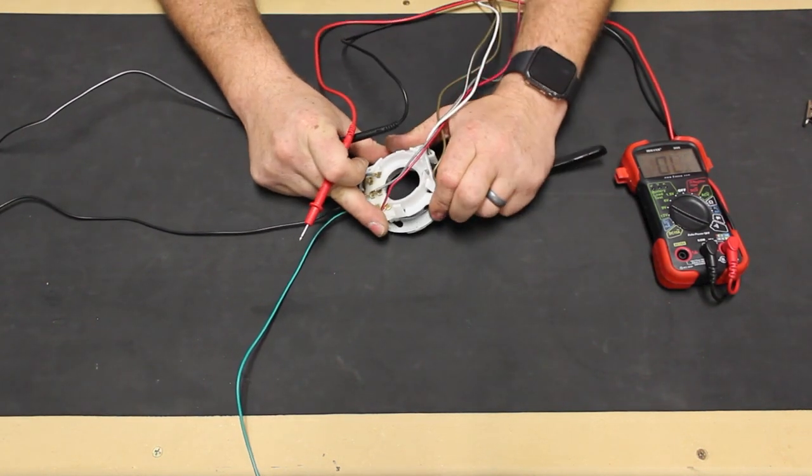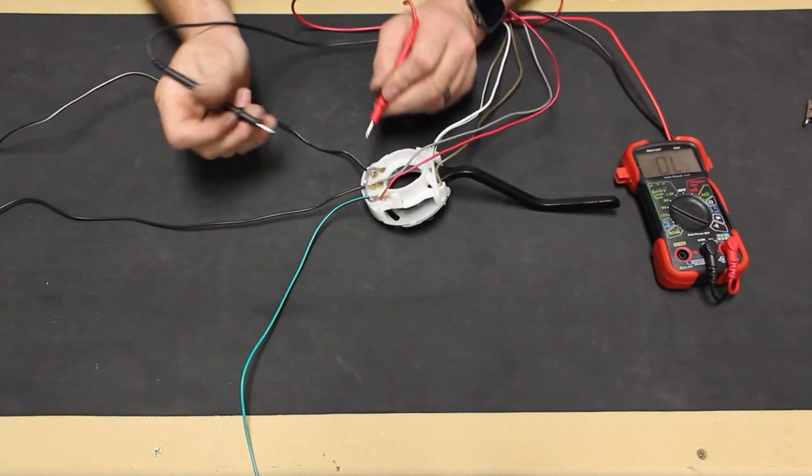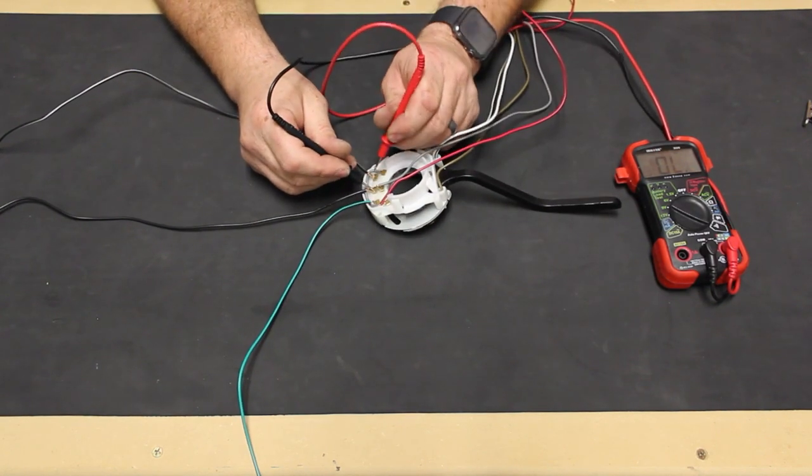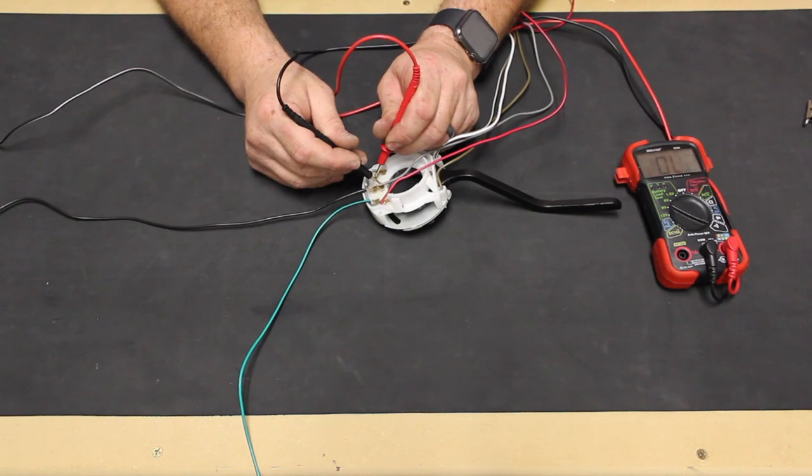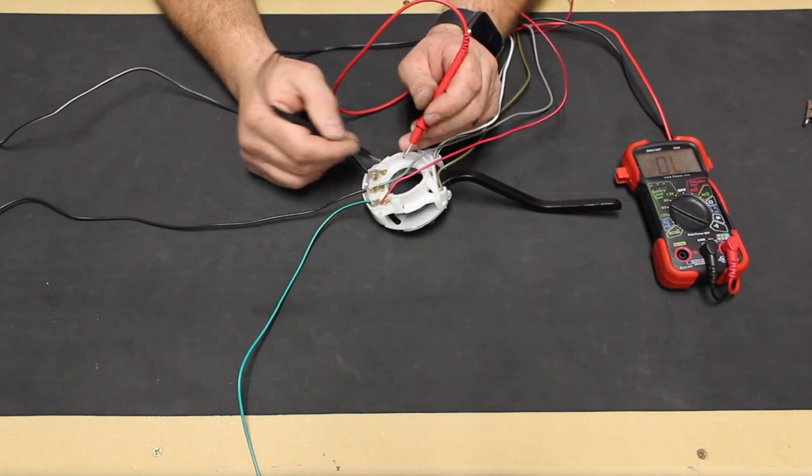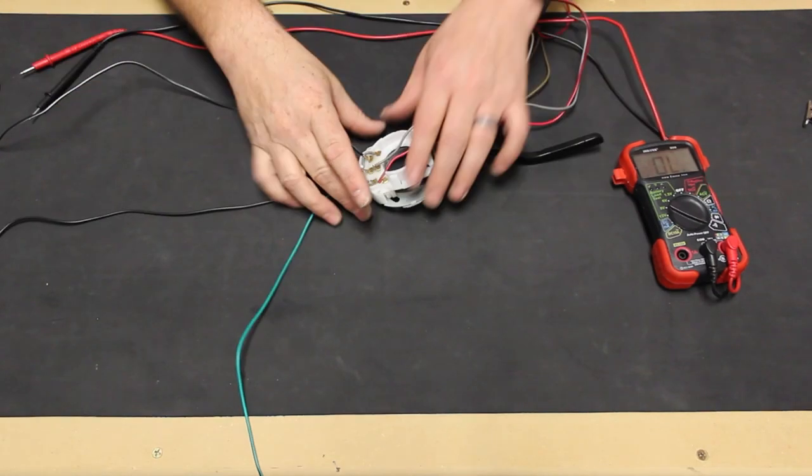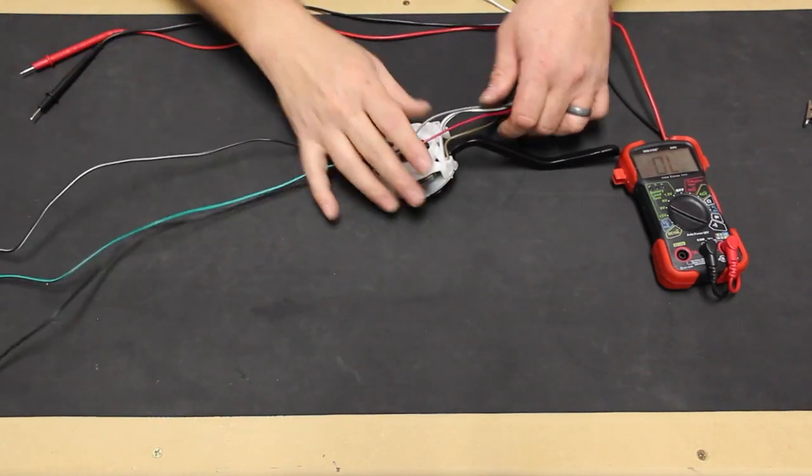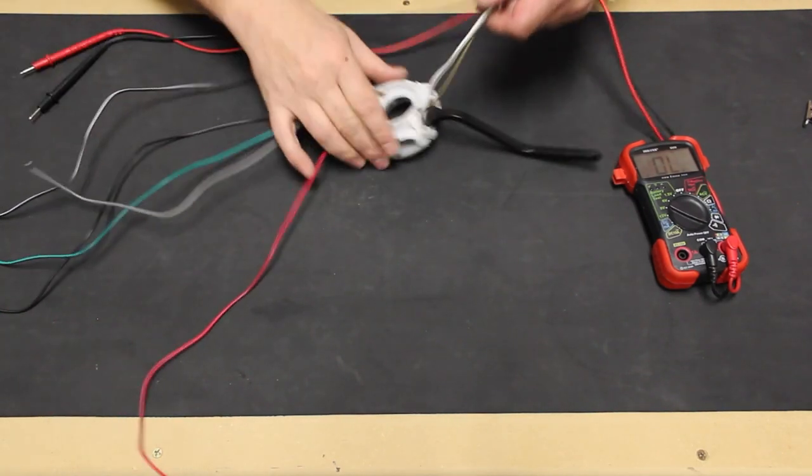Moving the turn signal lever to the left position, we check the terminals again at the black-white left turn signal terminal and at the inner terminals. Everything works, but as we mentioned, the wires at the inner terminals will be removed. We only need the three wires from the outer terminals here and the three wires from the opposite side of the switch.